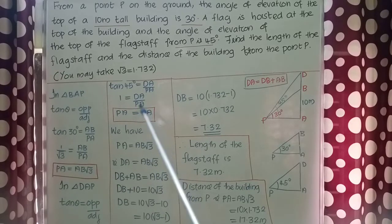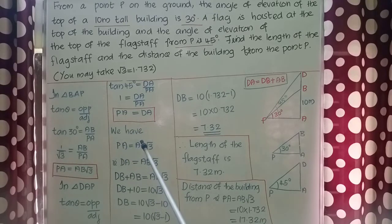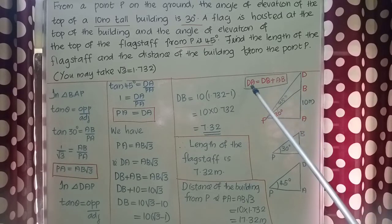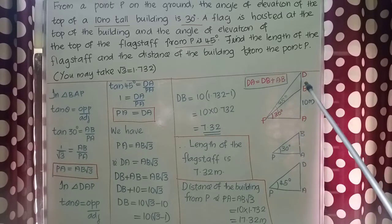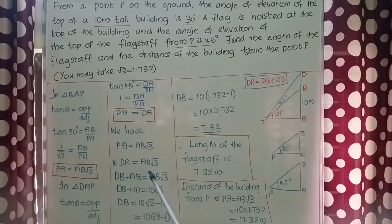So here we got PA = DA, and here we got PA = AB√3. In this equation, PA can be replaced by DA. So we have DA = AB√3 because they are equal. Now, looking at the figure, DA is the total length. We can write DA = DB + AB, so we can replace DA by DB + AB.